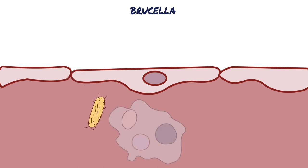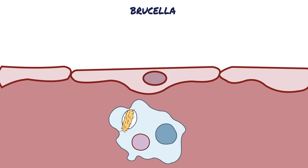After the initial exposure, the organisms are phagocytosed by macrophages and monocytes. Normally, phagocytes destroy invading bacteria by wrapping them up in vesicles called phagosomes, which will merge with lysosomes to form a phagolysosome. Lysosomes are round vesicles that contain hydrolytic enzymes, which are released inside the phagolysosome to destroy the invading bacteria.